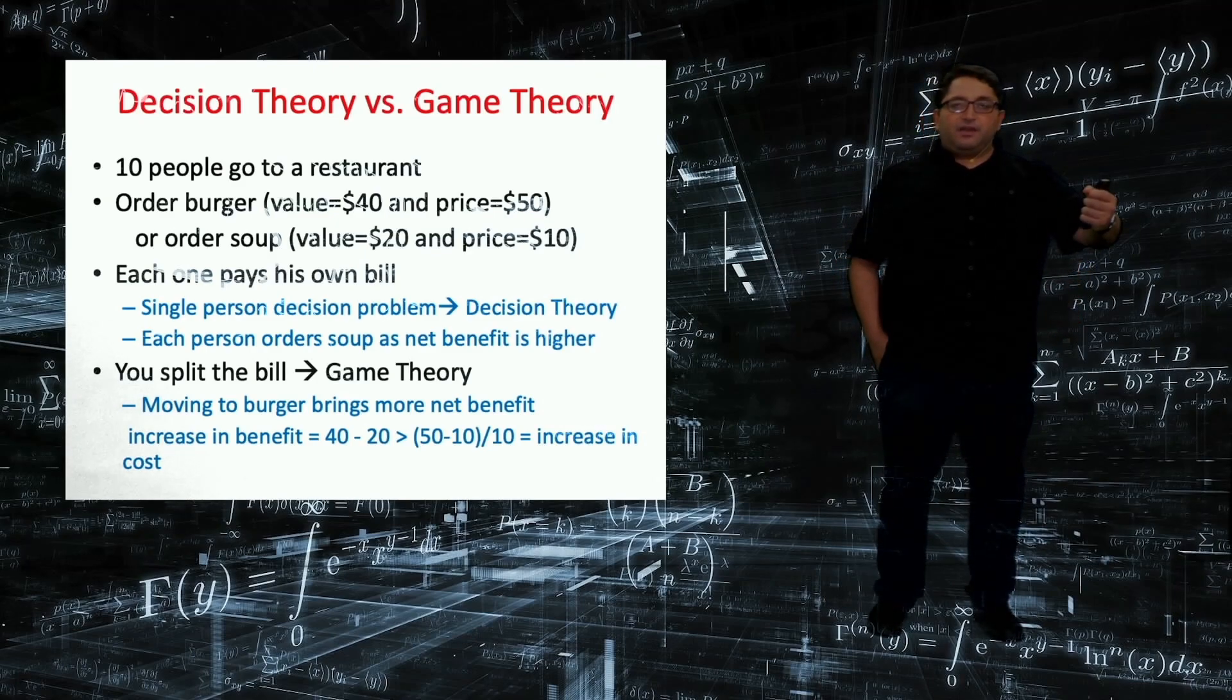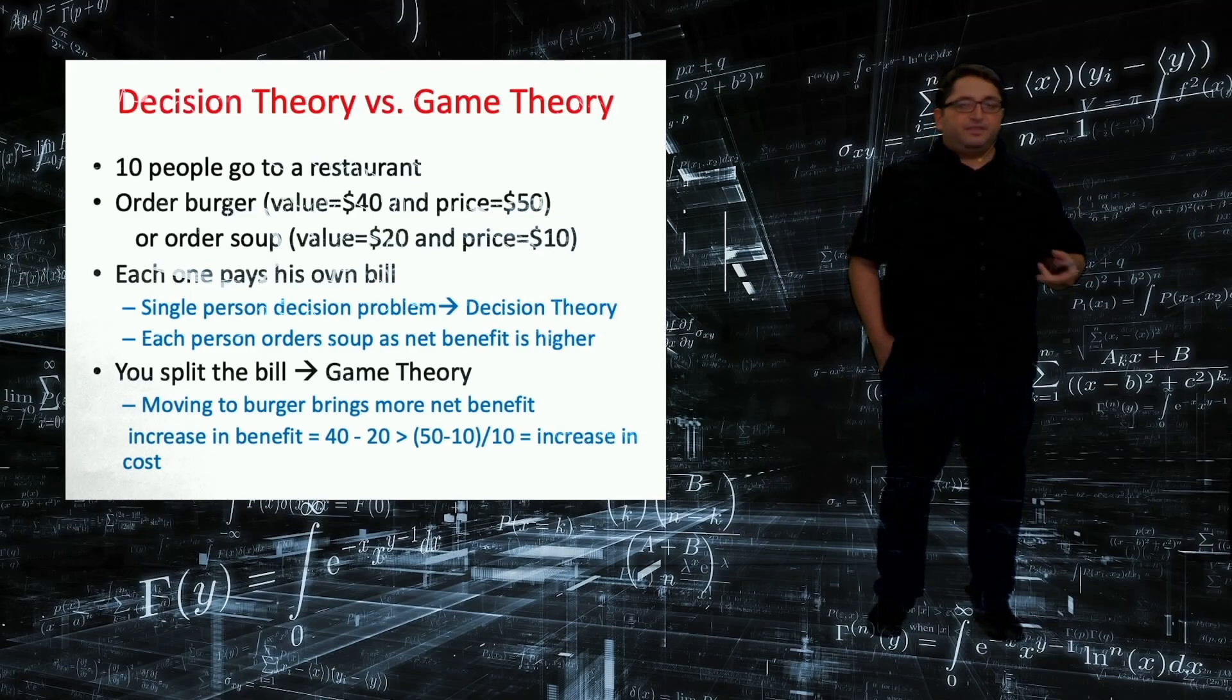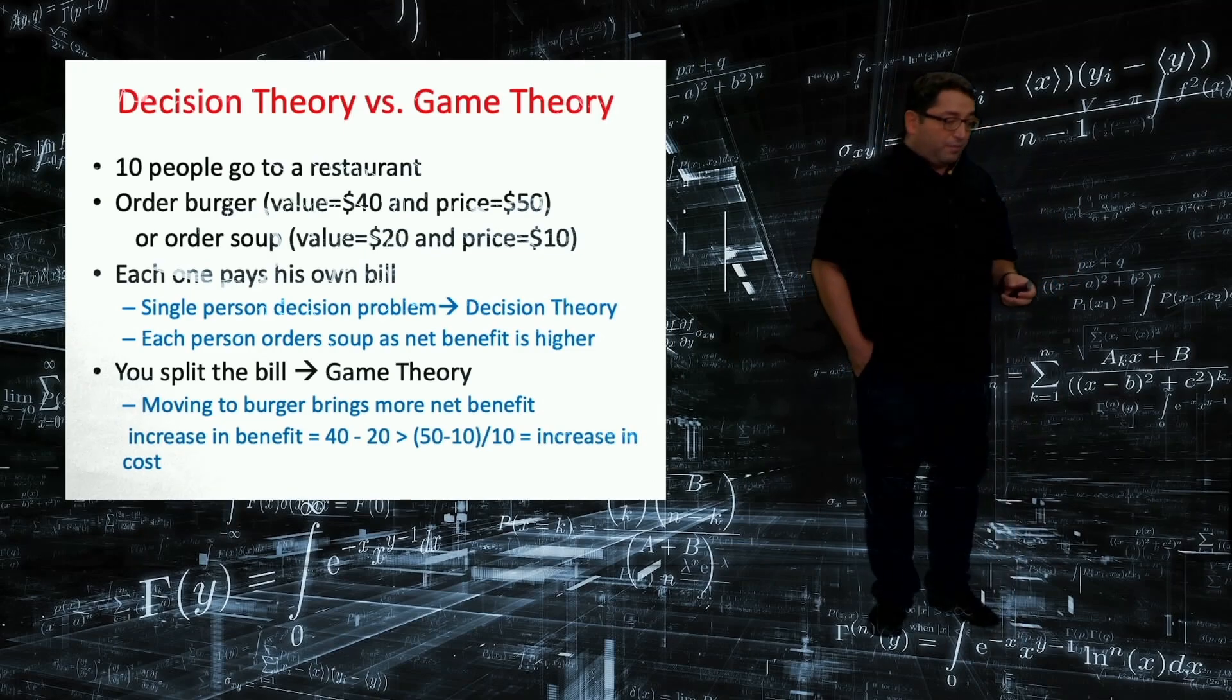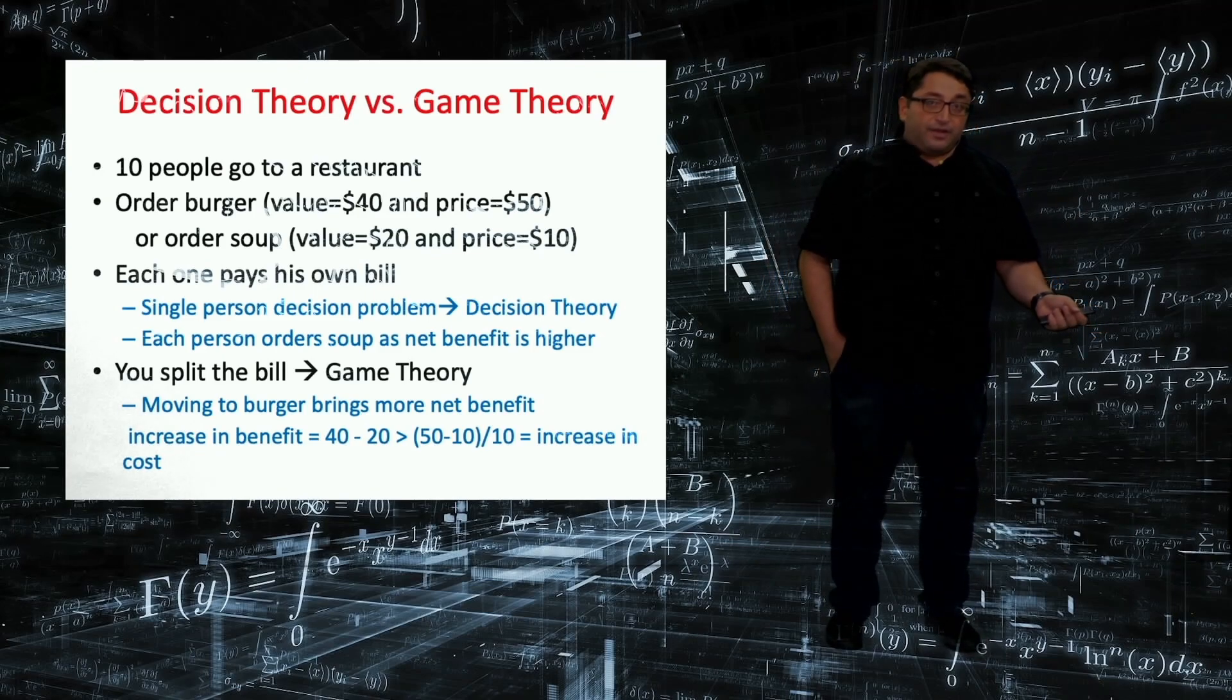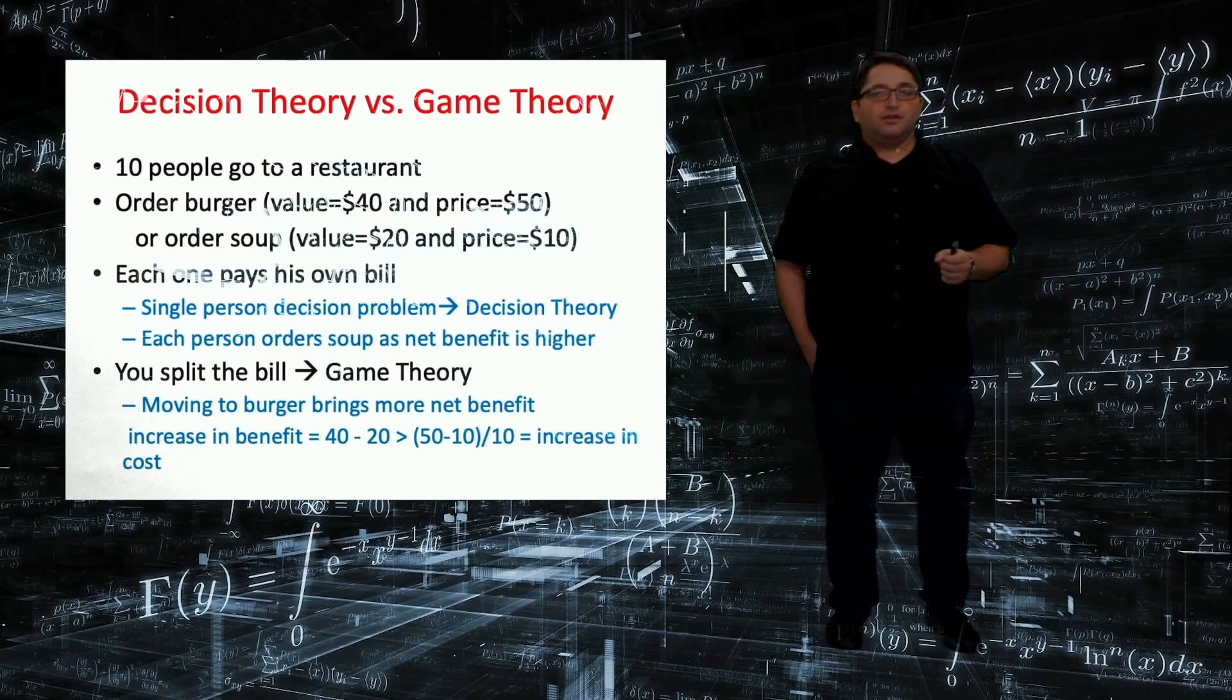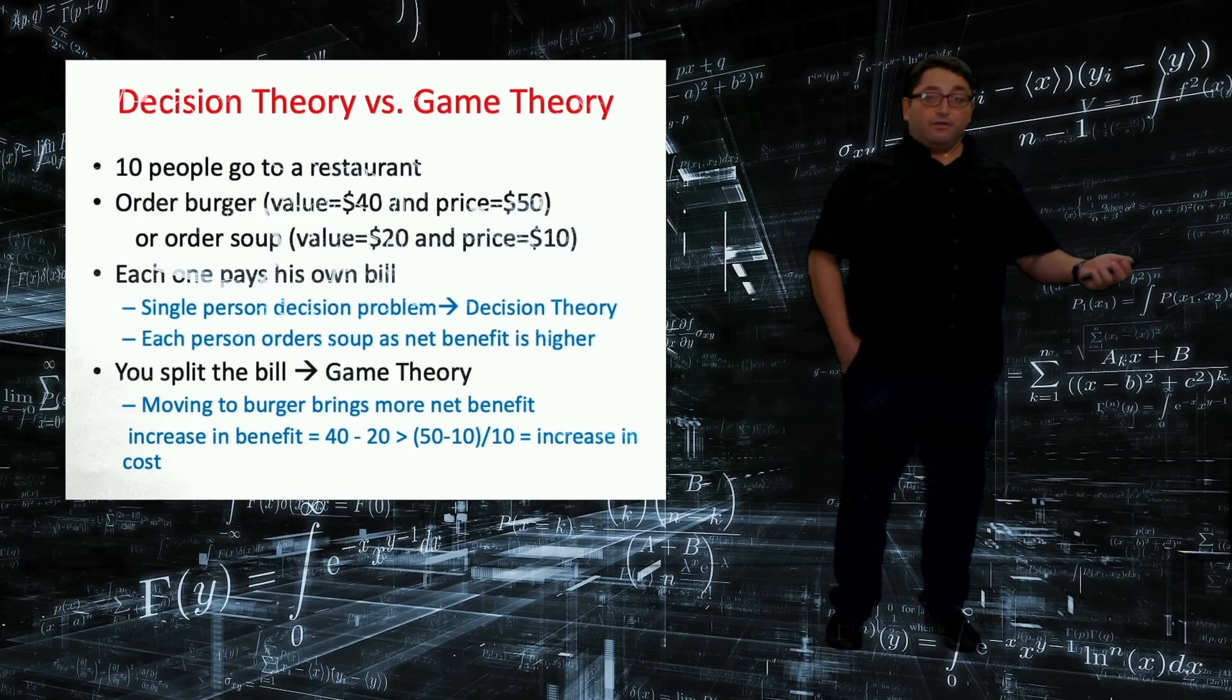My value increases from $20 to $40. In a sense, I am going to be $20 happier. And how does my cost increase from $10 to $50? The cost increases by $40. However, I am not going to pay all $40 by myself because we are splitting the bill. So my share will be just $4. So my net benefit increases by $20, increase in the utility minus $4, which is increase in the cost, that will bring net $16 benefit.